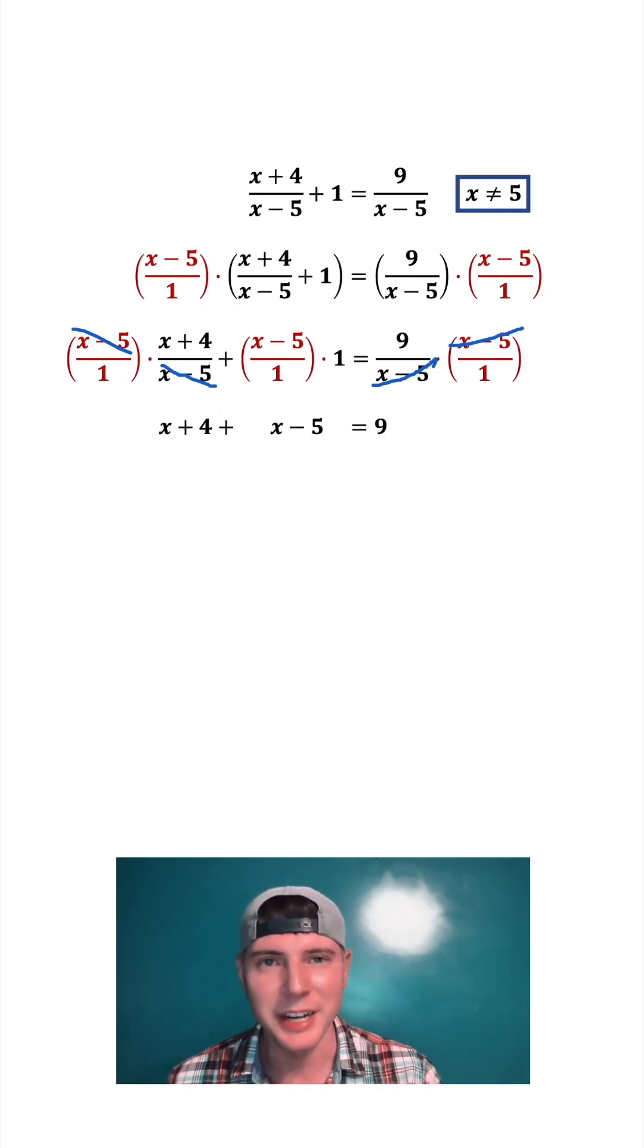We're going to simplify this by combining like terms. x plus x equals 2x. 4 minus 5 equals negative 1. And then we bring down the 9.